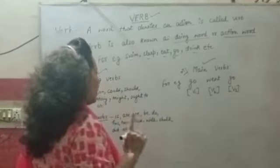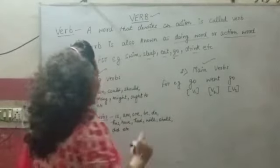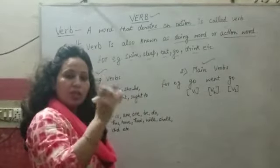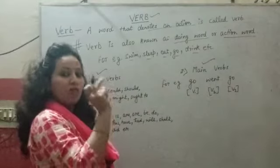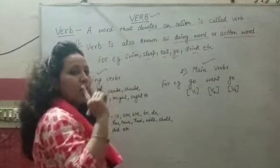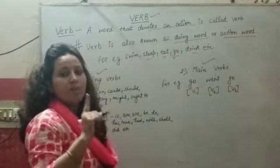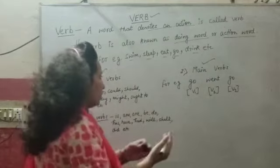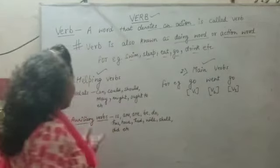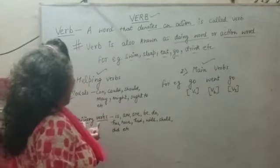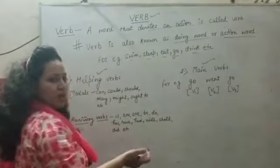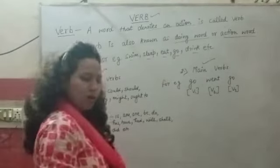Here is something very important: in any sentence, when the modal is the helping verb, we use the first form of the main verb. Now let's learn about auxiliary verbs. Auxiliary verbs are: is, am, are, was, were.